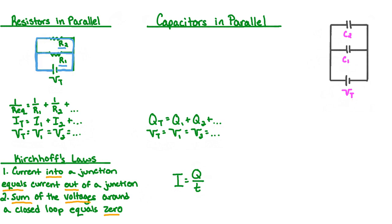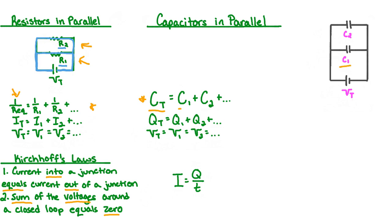Finding equivalent capacitance will be different than finding equivalent resistance. For resistors in parallel, the more resistors we add in parallel, the smaller the equivalent resistance becomes. It turns out that the capacitances actually add together, so the total capacitance is equal to the sum of all the capacitances. More specifically, the total capacitance of the circuit, Ct, is equal to the capacitance of capacitor 1, C1, plus the capacitance of capacitor 2, C2, and so on. Therefore, the more capacitors we add in parallel, the larger our total capacitance becomes, and the total capacitance will always be greater than the value of the individual capacitors in parallel.